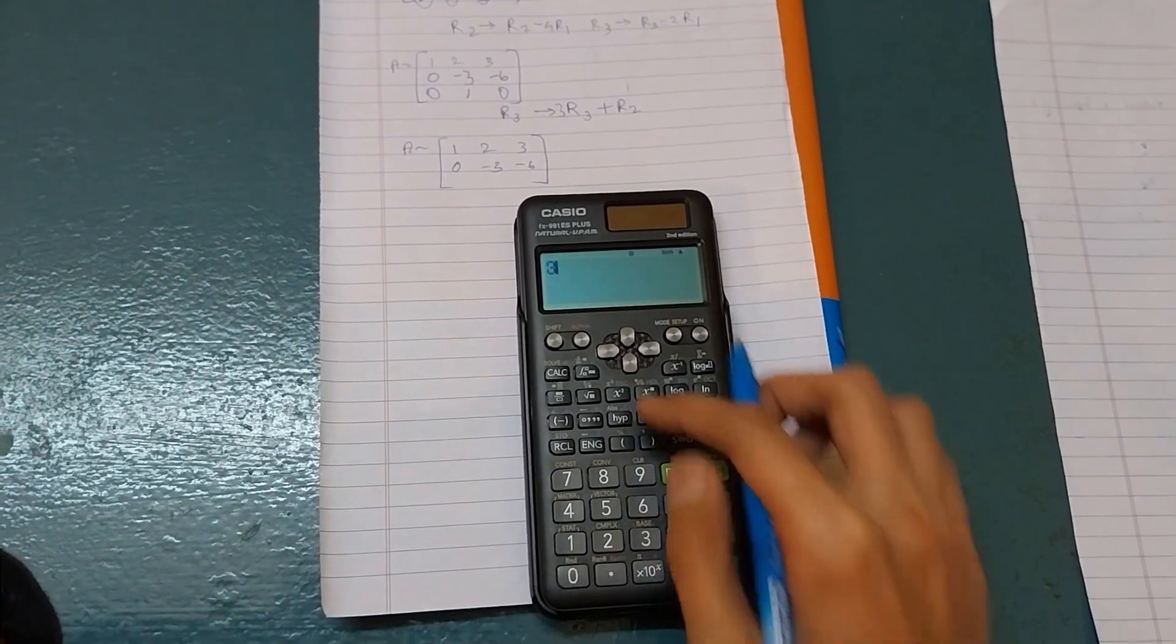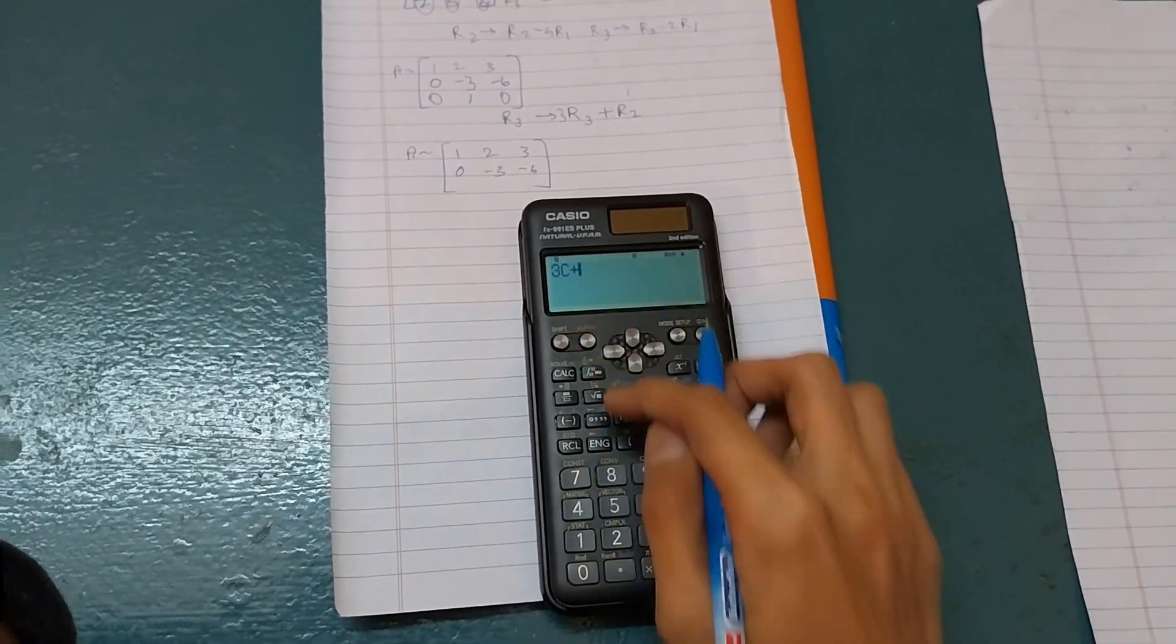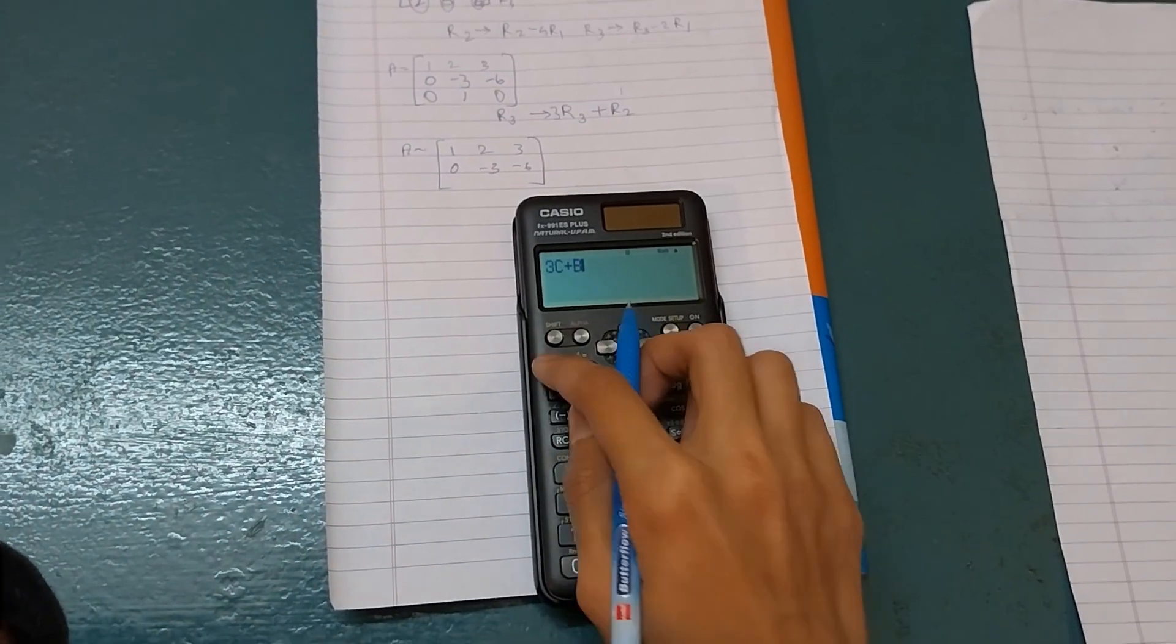That is 3 times alpha C plus alpha B. Then calculate.